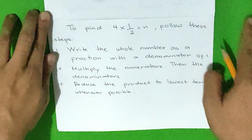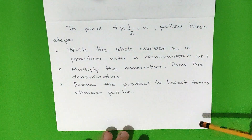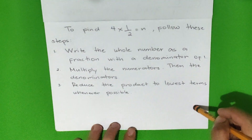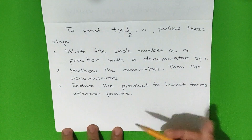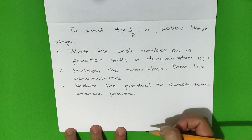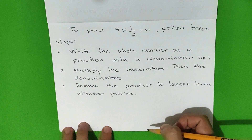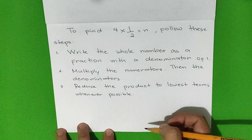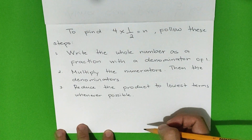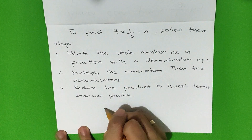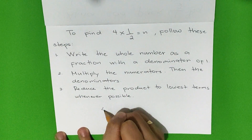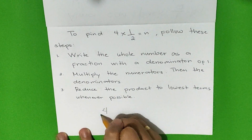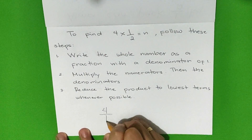To find 4 times one-half equals n, follow these steps. Step 1: Write the whole number as a fraction with a denominator of 1. What is our whole number? It's 4. So we will write the whole number 4 as a fraction with a denominator of 1.